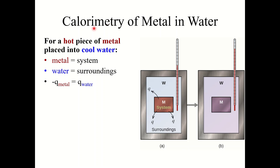Let's talk about calorimetry of metal in water. Say we take a hot piece of metal and place it into cool water. We'll refer to the metal as the system and the water as the surroundings. The hot piece of metal is placed in the cool water, and heat is transferred from the metal — the system — to the water — the surroundings. This makes it an exothermic process. After some time, they'll reach equilibrium temperature and the water temperature should have increased. Assuming our calorimeter is an isolated system, we can say negative Q-metal equals Q-water — the heat lost by the metal equals the heat gained by the water. These two Q values have the same magnitude but opposite signs.